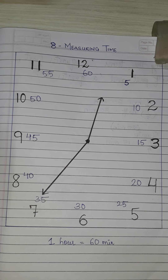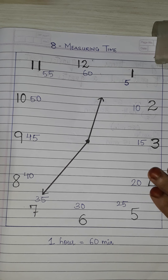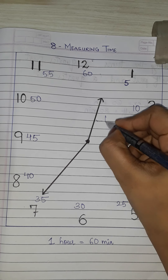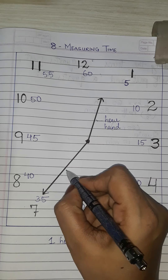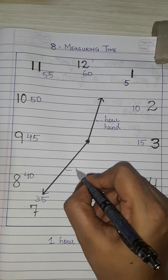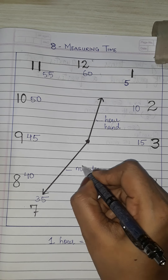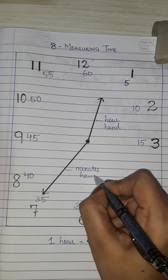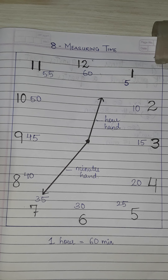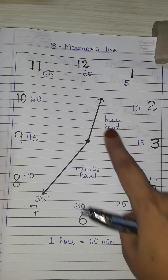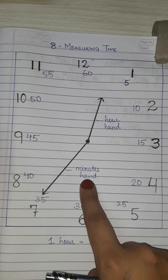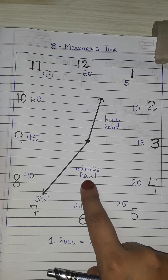We have 2 hands in a clock — one is the hour hand and the other is the minute hand. Ghaadi mein 2 haath hote hain. Ek jo hour ka measurement karta hai aur jo doosra hota hai, woh bada hota hai — woh minutes ka measurement karta hai.